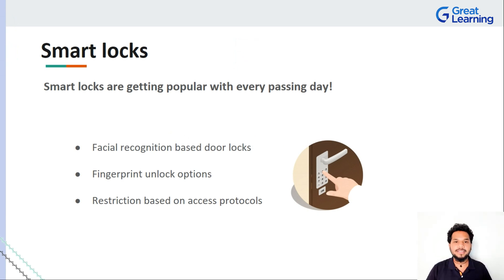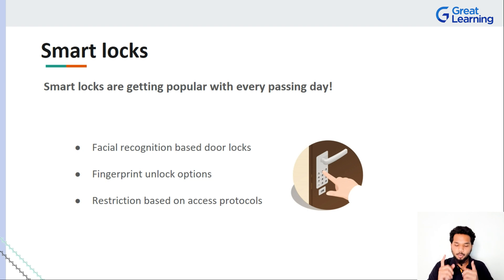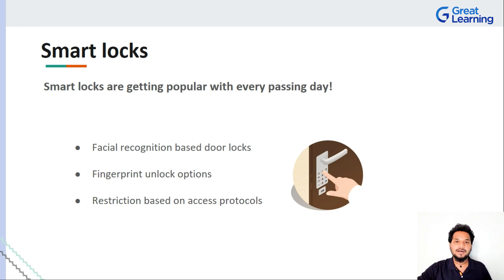Smart locks might seem like something you'd rather buy in the market than build as a project, but the concept of how you authenticate a door to lock or unlock is very simple to implement in IoT. Using an Arduino or a Raspberry Pi, you can build a complete application where you can lock or unlock your house remotely via Wi-Fi.